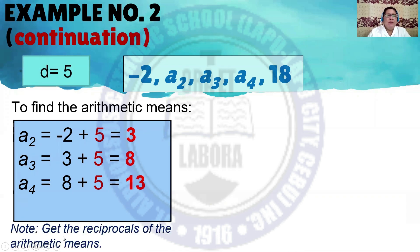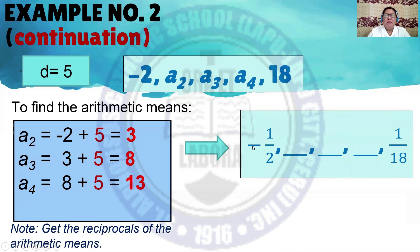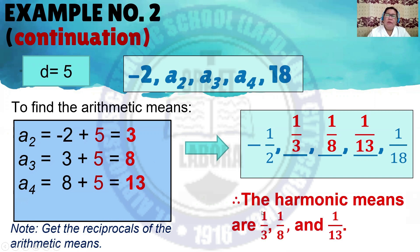We have to get the reciprocals of the arithmetic means. Therefore, the first term is negative 1/2. The reciprocal of 3 is 1/3. The reciprocal of 8 is 1/8. The reciprocal of 13 is 1/13. Therefore, the harmonic means are 1/3, 1/8, and 1/13.